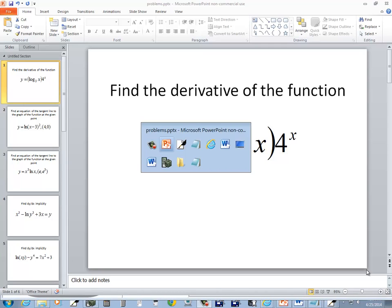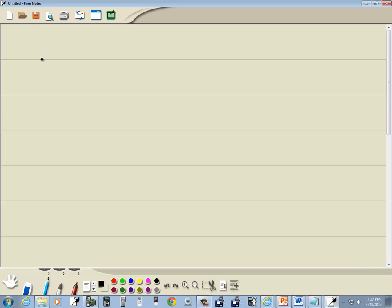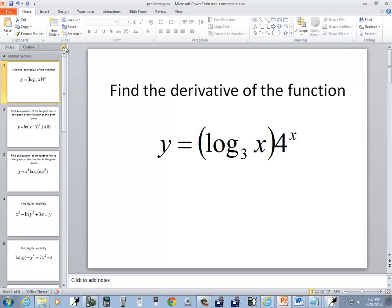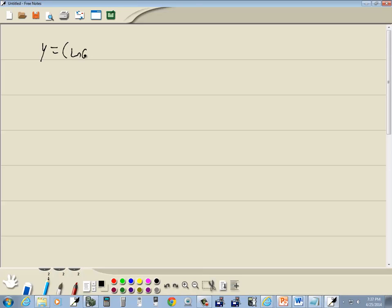Let's take a look at this problem. Now y is equal to log base 3 of x times 4 to the x. We want to find derivatives, so this will be a product rule. This will be P, this will be Q.